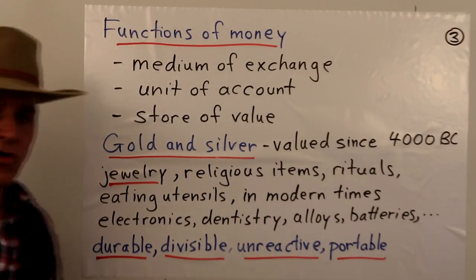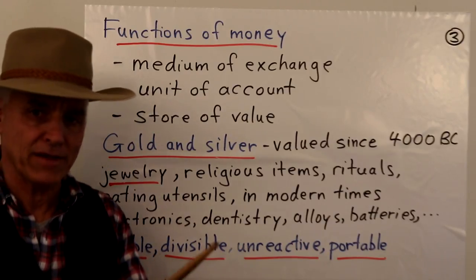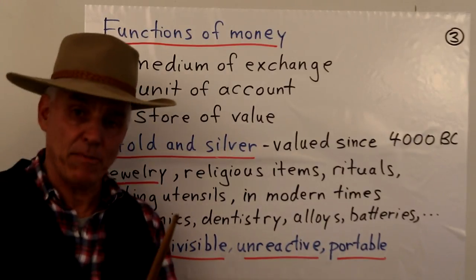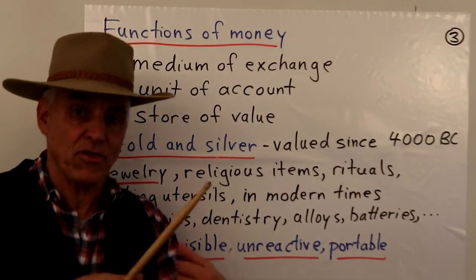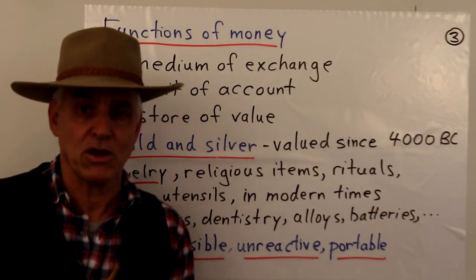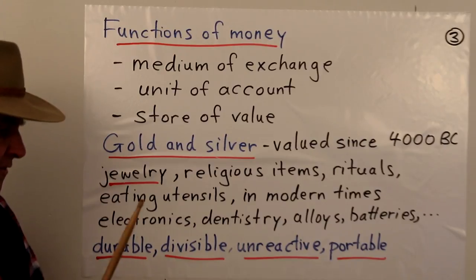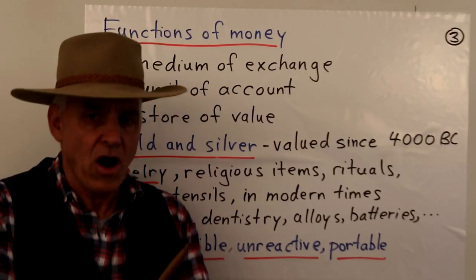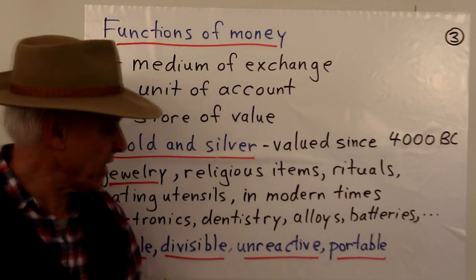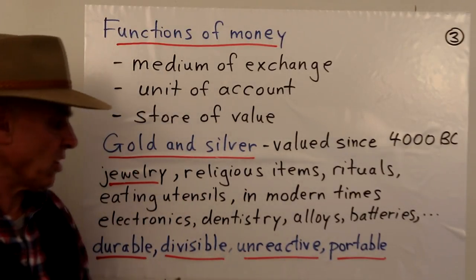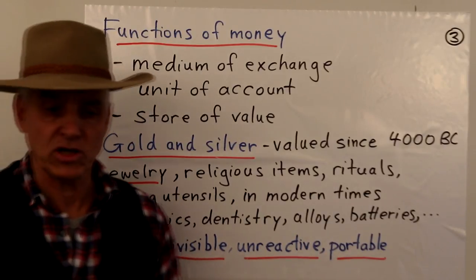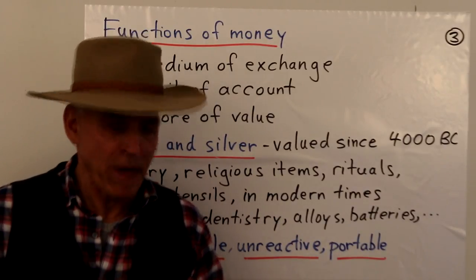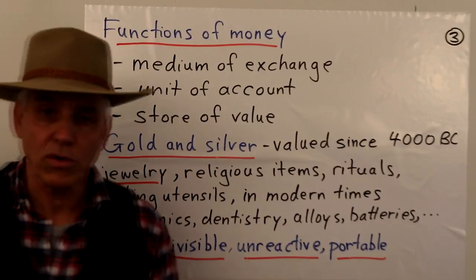First of all, they are durable — they don't decay, rot, or disfigure with time. They are divisible: you can divide them up, melt them down, put them in bars or coins. They're unreactive and don't tarnish when brought into contact with other things. And of course they're portable — gold especially, because it's much lighter for the same value as silver. So you can put a lot of value in your back pocket with gold or even silver.